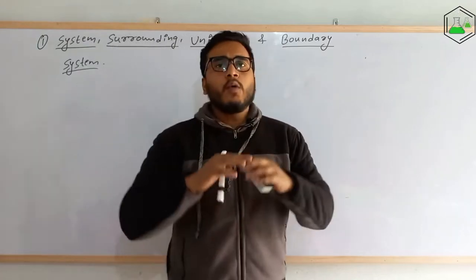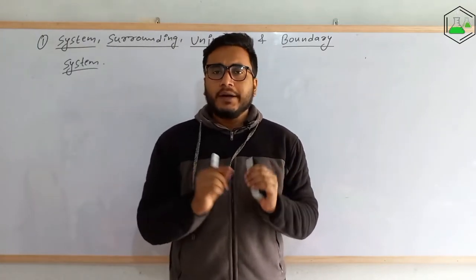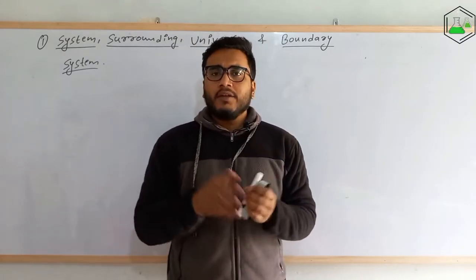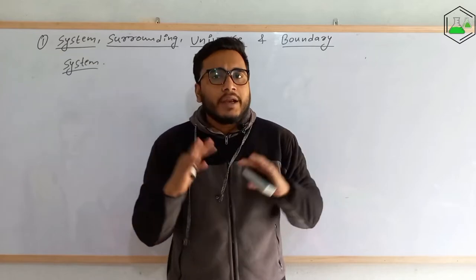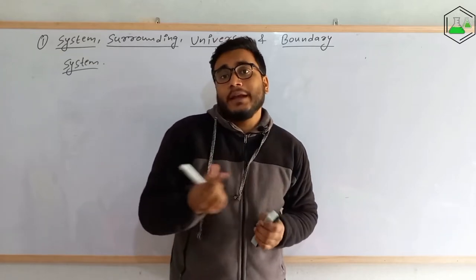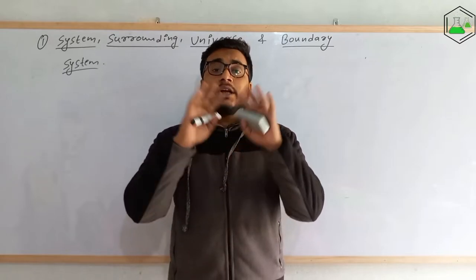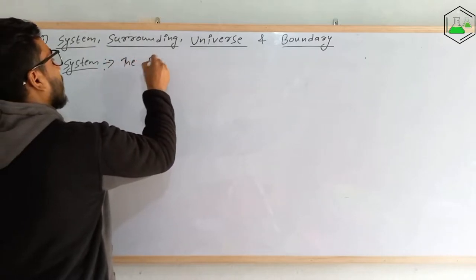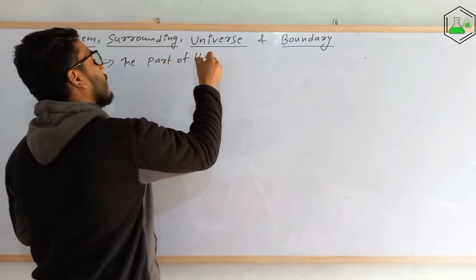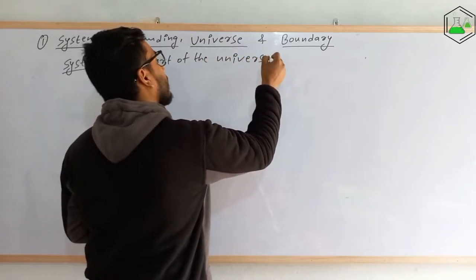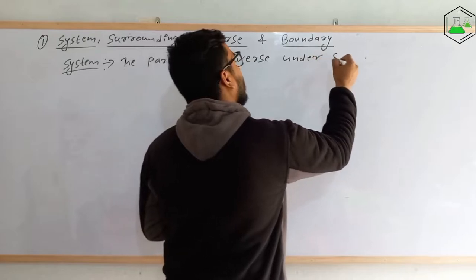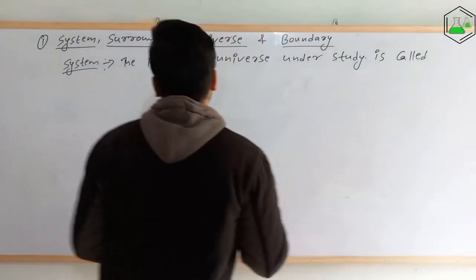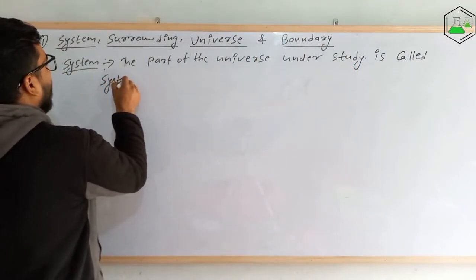The universe is the whole world, and any part under study is called the system. Suppose we have a chemical reaction — the region in which there is the effect of that chemical reaction is called the system. So, the part of the universe under study is called the system.